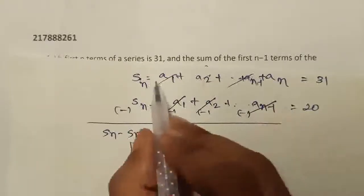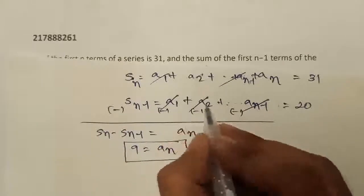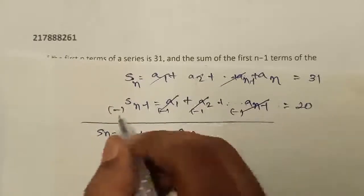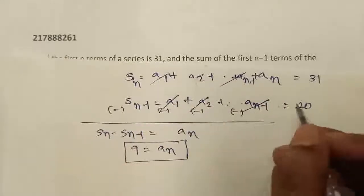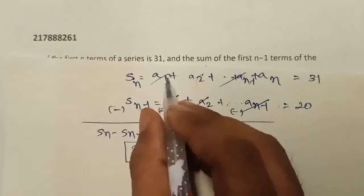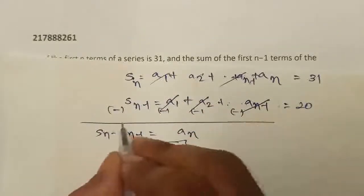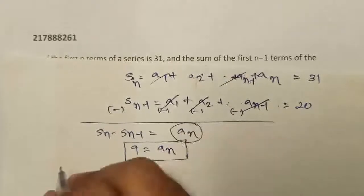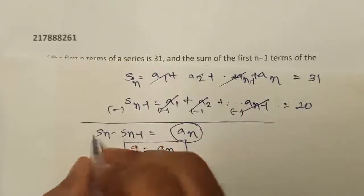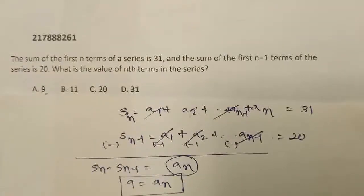Okay, sum of the nth term, this is equal to 31 and sum of n minus 1 terms will be adding them up to n minus 1 terms. If you subtract them, all the terms will be cancelled except aₙ because all the terms in Sₙ₋₁ are also in Sₙ. So, all these terms get cancelled if I subtract them. The only term which will be left is aₙ and on the left hand side, we are only left with 9. So, the nth term of the series will be 9.